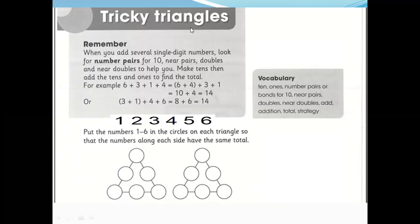After this, the next thing. Tricky triangles. Remember, when you add several single digit numbers, look for number pair for 10. Near pair. Double and near doubles to help you. Make 10s. Then add the 10s and 1s to find the total. For example, this one. We have this amount. We just find to make 10.